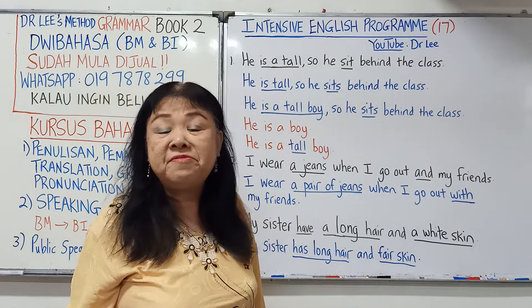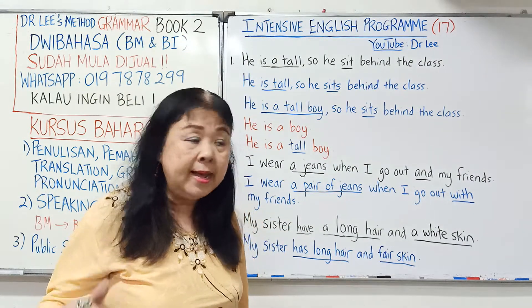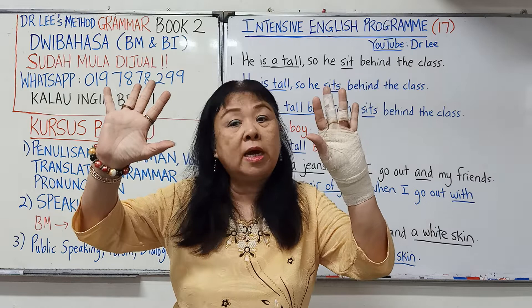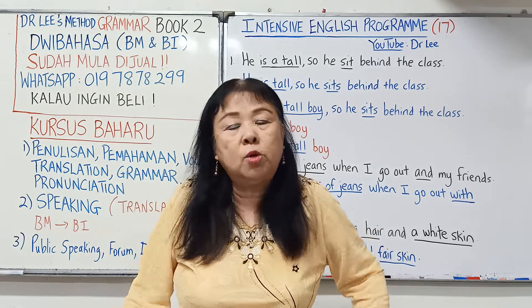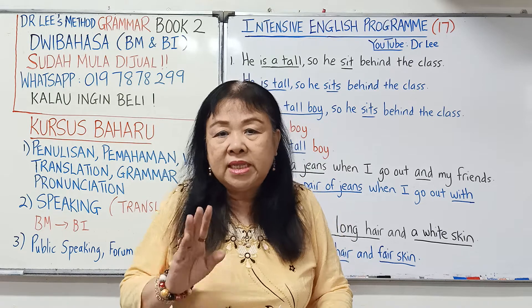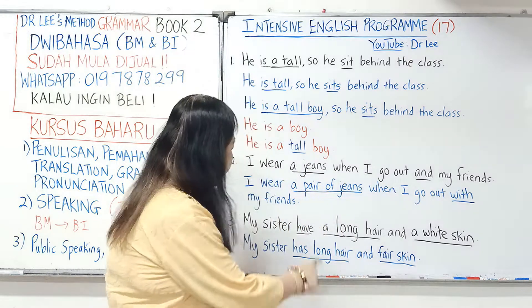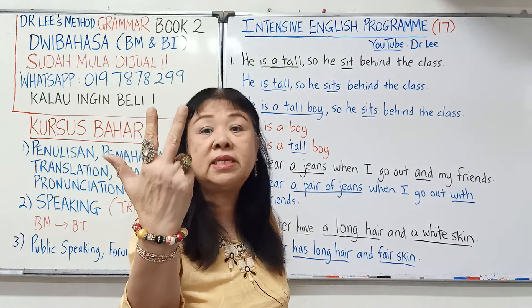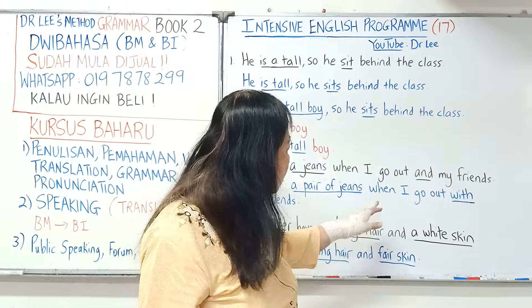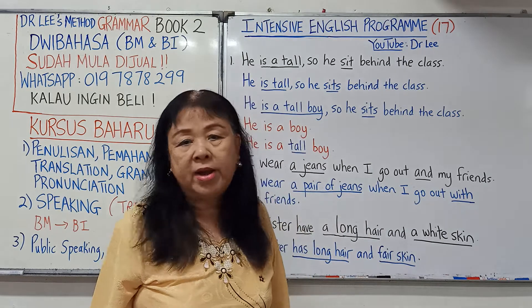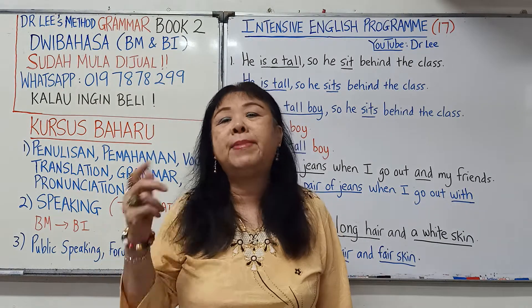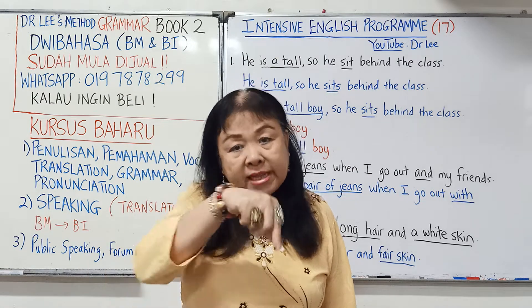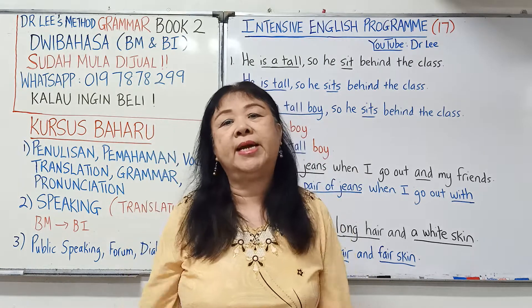'I wear a jeans when I go out' — di mananya terletak kesalahan? 'A jeans' tidak boleh. Asal pasangan tangan — contohnya sarung tangan — kaki, contohnya seluar pendek, seluar panjang, selipar, kasut, kita mesti ada 'a pair of' — tiga perkataan, bermaksud sepasang. Jadi, 'a pair of jeans.' Kalau dua pasang, 'two pairs of jeans' — tambah S kepada pair. Semua jeans itu memang ada S.